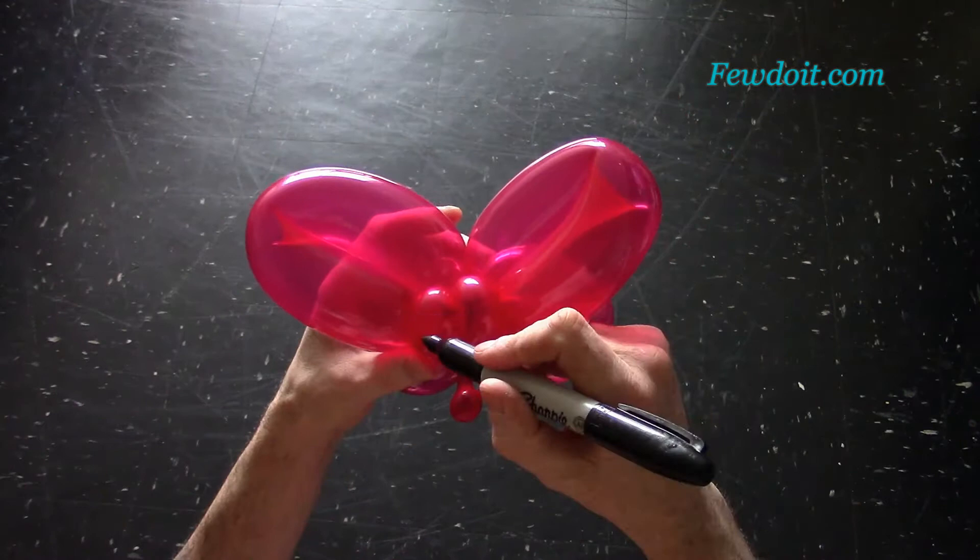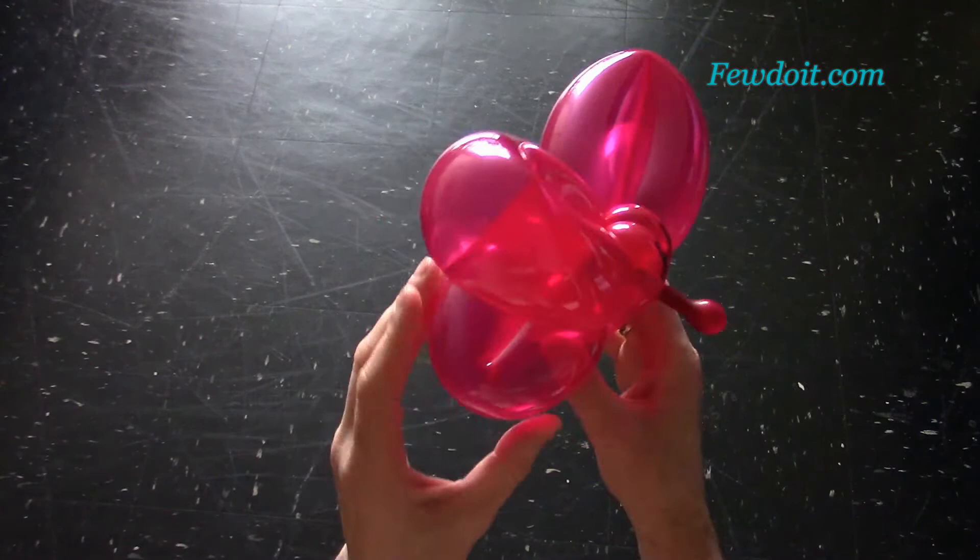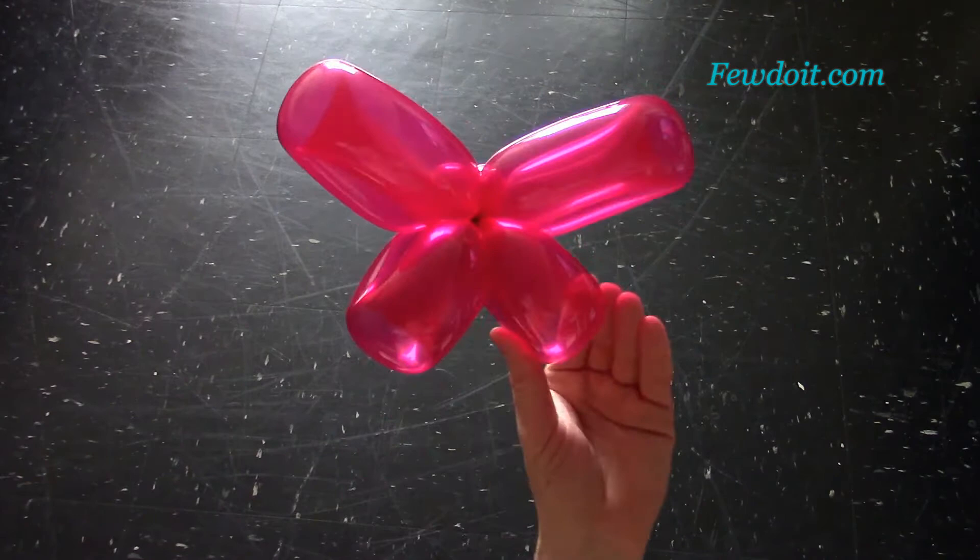I am going to use a permanent black marker to draw the eyes. You can give it a different expression. Here is the front view, the side view and this is the back view.